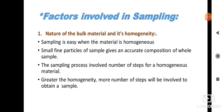Small or fine particles of a sample give an accurate composition of the whole sample. If our sample material consists of very small or fine particles, the process will be easier. But if there are lumps or very large-size particles, then the sampling process will not be accurate. The sampling process involves a number of steps for a homogeneous material.